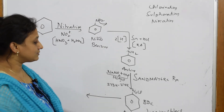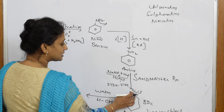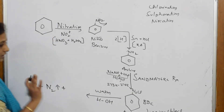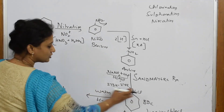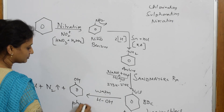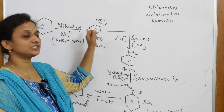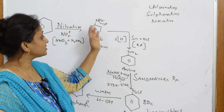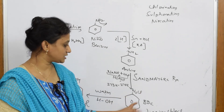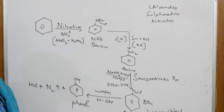Once BDC is formed, warm it in the presence of water. On warming, nitrogen gas escapes out immediately. HCl also comes out, and the leftover OH⁻ from water attacks the ring — giving phenol. Summary for Preparation 3: benzene → nitration (NO₂⁺ electrophile, HNO₃/H₂SO₄) → nitrobenzene → reduction (SnHCl) → aniline → Sandmeyer's reaction (NaNO₂/HCl, 273–278 K) → BDC → warm with water → N₂ escapes → phenol.